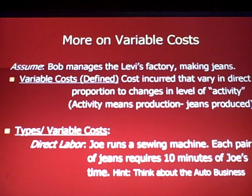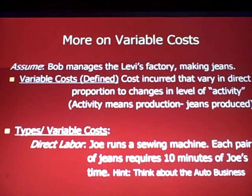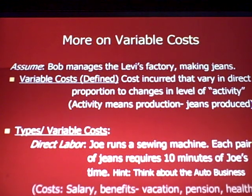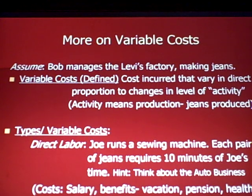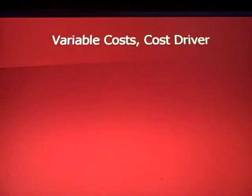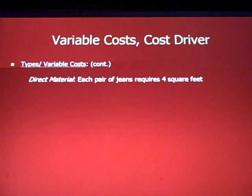Joe is an employee who runs a sewing machine. Each pair of jeans requires 10 minutes of Joe's time. As a hint, think about the auto business — one of the reasons that GM, Chrysler, and Ford have had trouble making money is they have very high labor costs compared with companies overseas. Those costs aren't only salary, but also benefits, vacation, pension, and the big problem for American auto companies: health care costs, particularly for retirees.